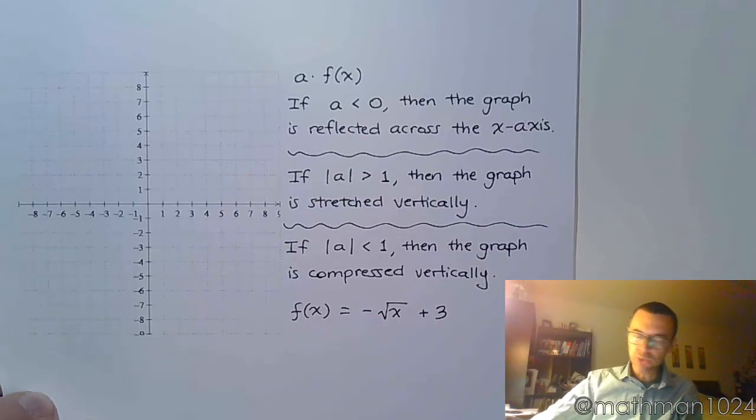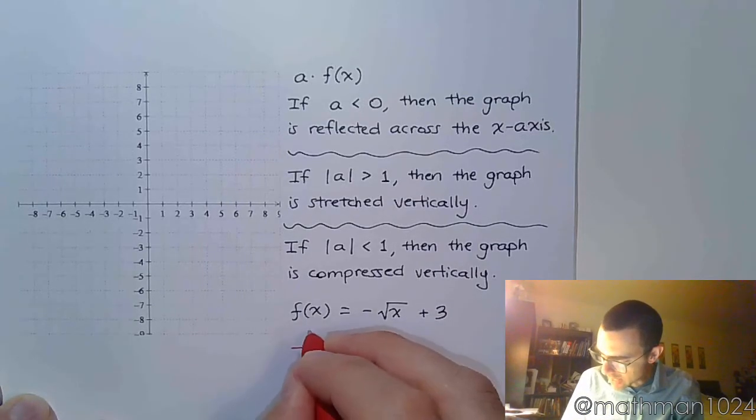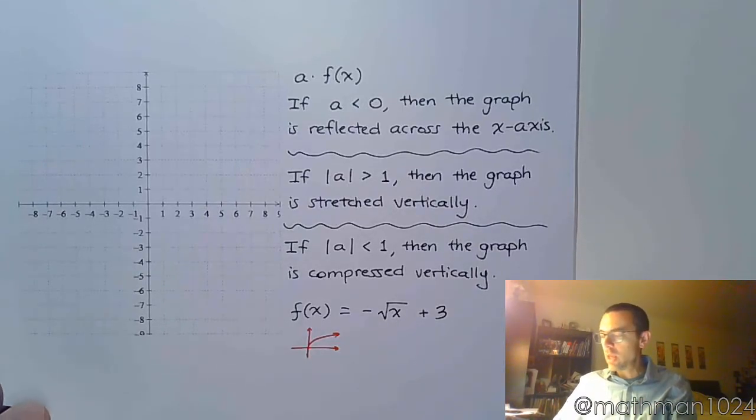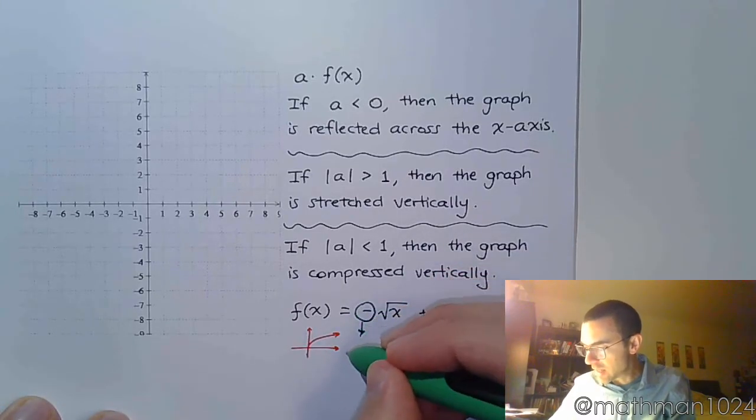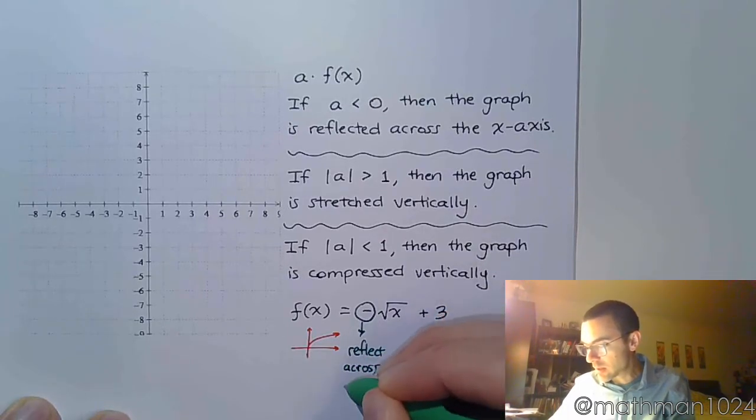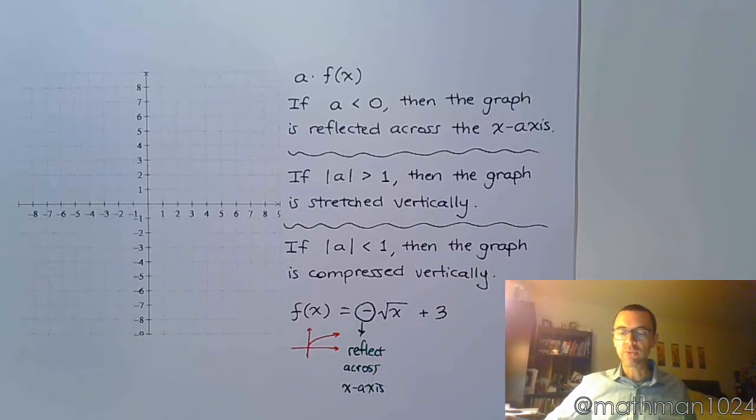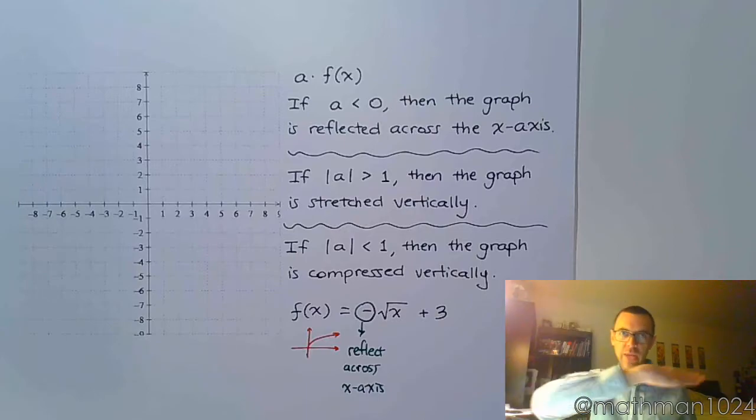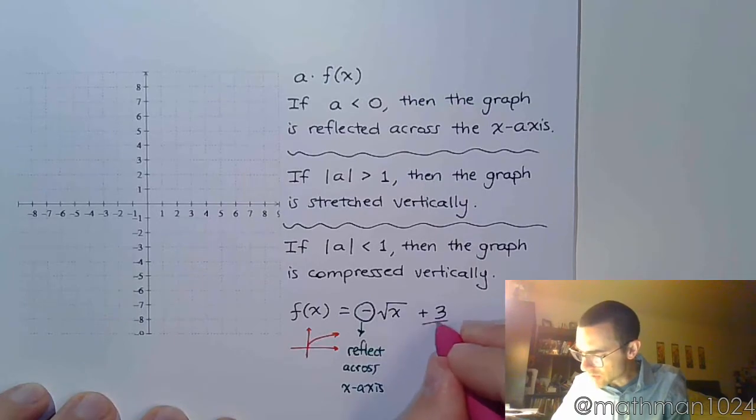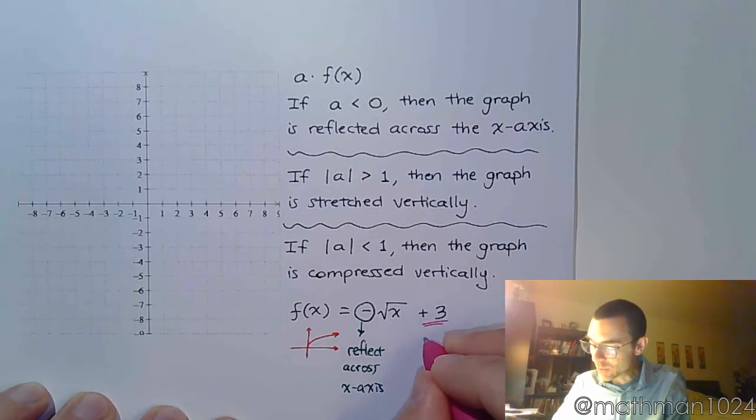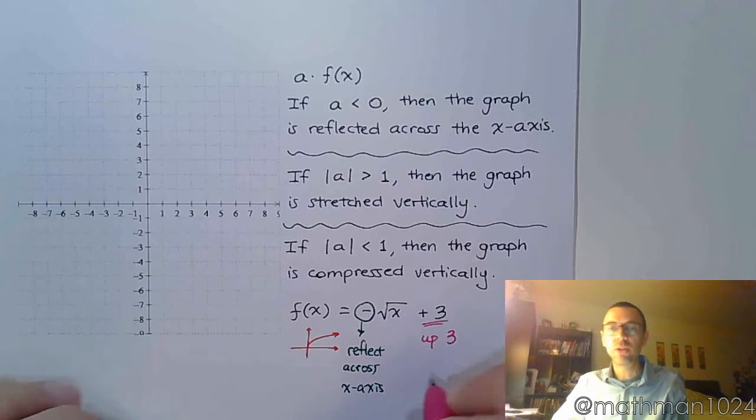So our square root shape is that half sideways parabola, like that. The negative inside, this is where things get tricky. This negative inside is going to reflect you across the x-axis. It's going to basically turn you upside down. So instead of going up and out like this, it's going to go down like that. And then plus 3. So plus 3 is outside. We're going to do exactly what we see. So that means I'm going to go up 3 units.